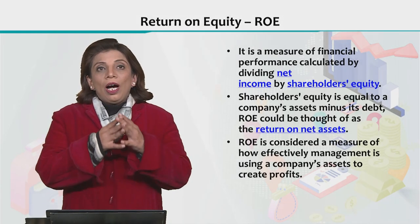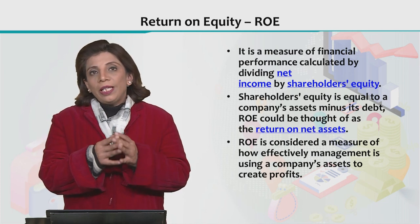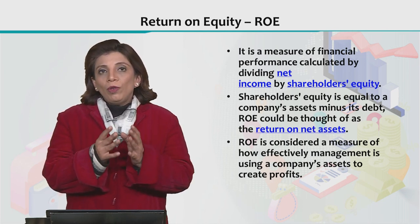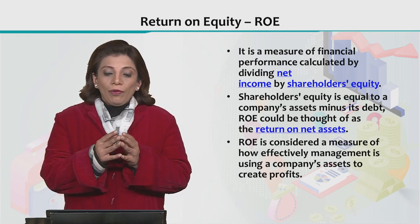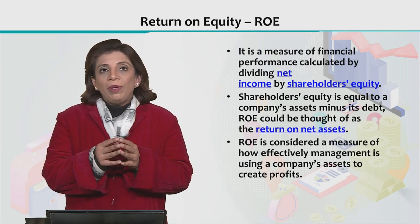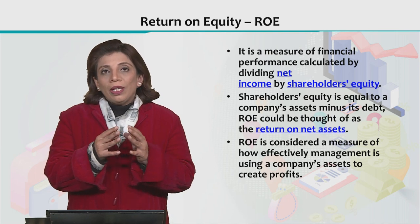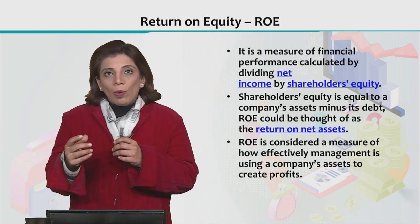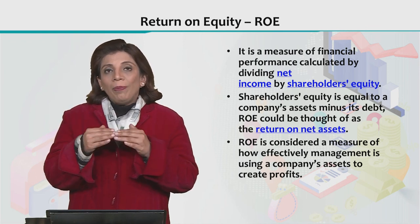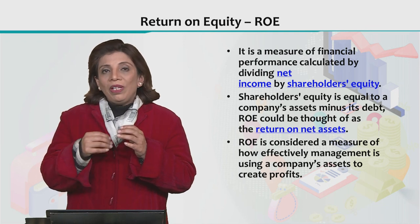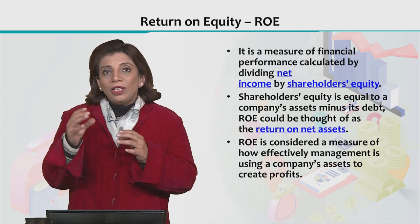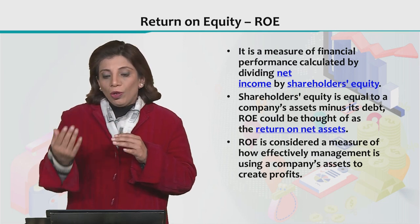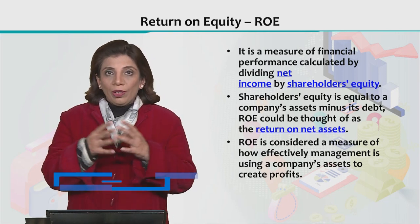In order to understand how the profitability of a company can be assessed, we use the concept of different financial ratios. One very useful financial ratio is return on equity, abbreviated as ROE. It basically tells you the ratio of net income to shareholder's equity, considering how much a company owes in debt, giving you an idea of the proportion of net income earned due to shareholder participation or investment in that company.